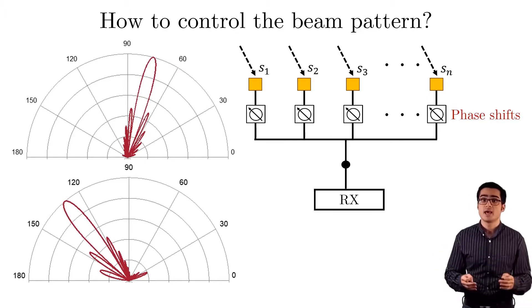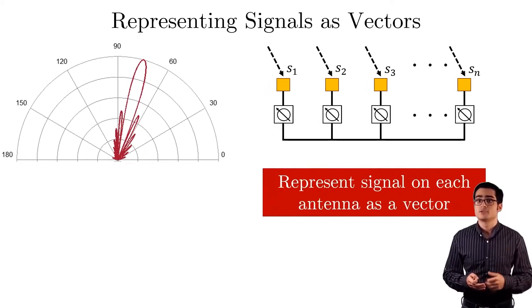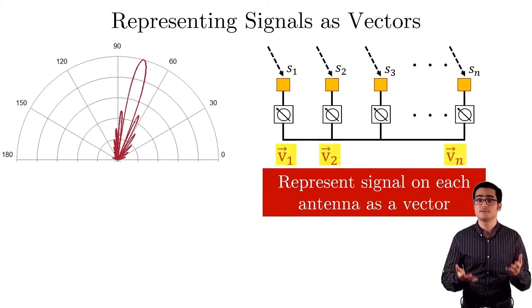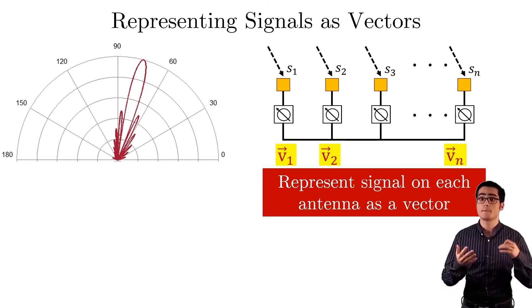The first step is to represent the received signals as vectors, so that we receive vectors v1, v2, all the way to vn, and the final received signal is the summation of these vectors.